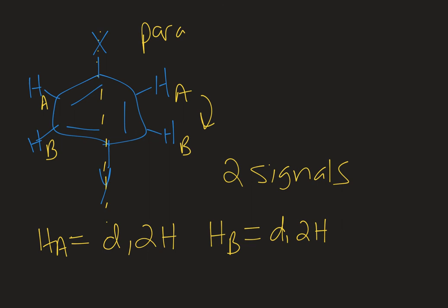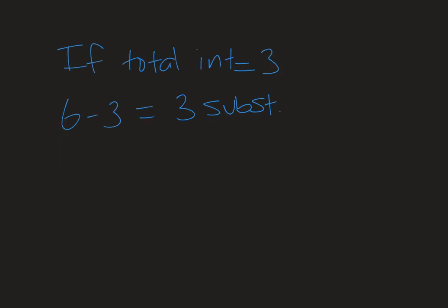So you can distinguish between the substitution pattern based on the number of signals and the splitting of those signals. So if you can determine your number of substituents from the total integration in the aromatic region, you can figure out the different and unique ways that you can place those substituents on the ring and what expected splitting patterns you would get from that. And that will allow you to match your compound to the NMR spectrum that's given. And it doesn't have to stop at two substituents. It could be any number of substituents. So if the total integration in the aromatic region is three, six, which is the total number of spots on a benzene ring, minus three is equal to three. So you'd have three substituents.